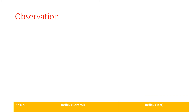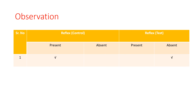Observation: In case of the control, where the animal leg was dipped in normal saline solution, the reflex is present. But in the test solution, that is 0.1 normal HCl, the reflex is absent due to the effect of the local anesthetic.